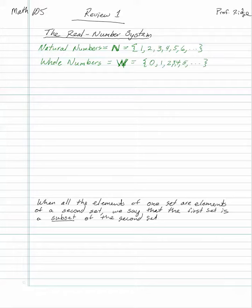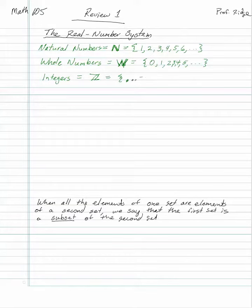The next set of numbers is the integers. We use capital Z with an extra line in it. Integers are the whole numbers plus their opposites: negative 3, negative 2, negative 1, 0, 1, 2, 3, and so on.